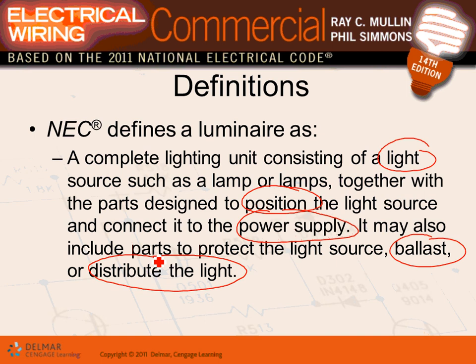A luminaire is a lighting source, a reflector, and some of them have ballasts — so you can pump the voltage high and maintain the arc. A way of connecting it, a physical frame where you can mount the fixture, and then things to direct and diffuse the light to the location you want. That's a luminaire.